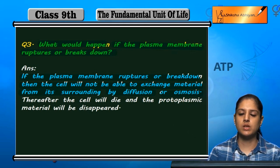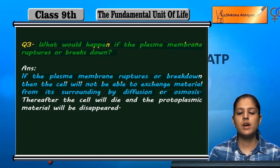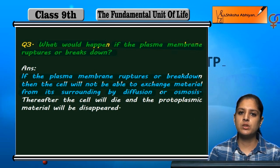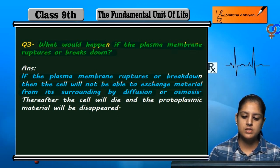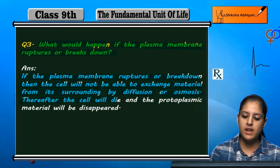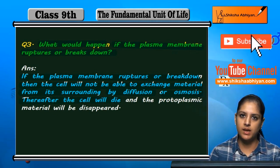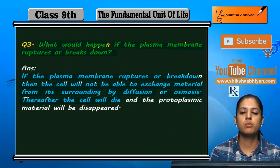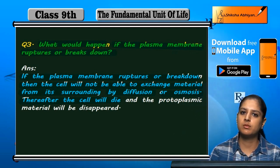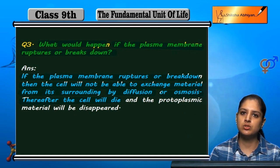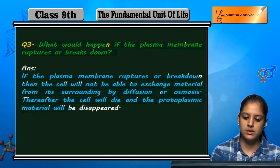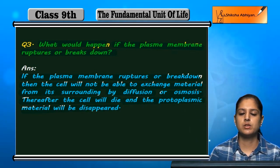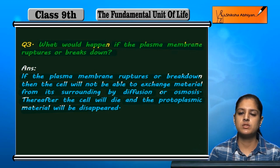If the plasma membrane is ruptured, then the exchange will be closed because the cell will ultimately die. Carbon dioxide, water, and other things that are exchanged will be closed, so the essential things that the cell needs will be unavailable. The cell will die and the protoplasmic material will disappear.